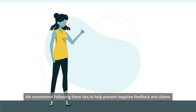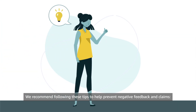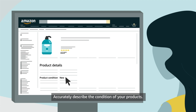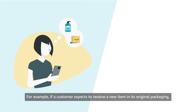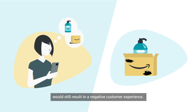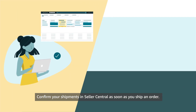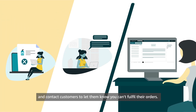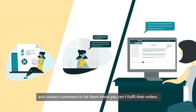We recommend following these tips to help prevent negative feedback and claims. Accurately represent your products using clear images and descriptions. Accurately describe the condition of your products — for example, if a customer expects to receive a new item in its original packaging, getting a used item in excellent condition would still result in a negative customer experience. Confirm your shipments in Seller Central as soon as you ship an order. Cancel out-of-stock orders and contact customers to let them know you can't fulfill their orders.